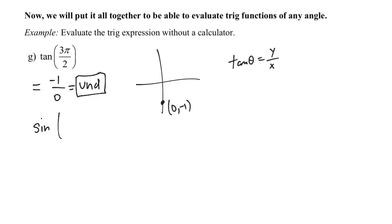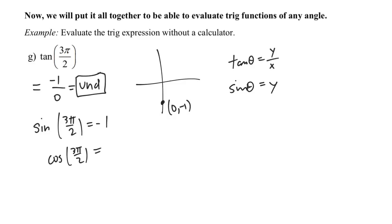What if I asked you for sine of three pi over two? Sine theta is just the y-coordinate, so the answer is negative one. And cosine of three pi over two is just the x-coordinate, so that equals zero. I'm asking these two additional questions just for more practice on quadrantal angles.